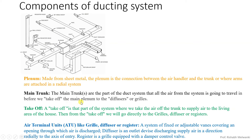Then what is the main path? From the main plenum to the diffusers or grills at the branches — at the end of the branches — you will find takeoffs. We take from the trunk to supply air terminal units like grill, diffuser, or register.